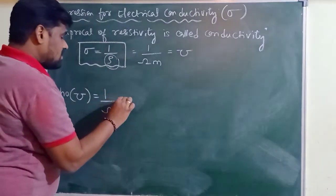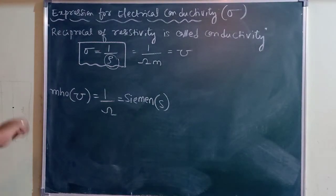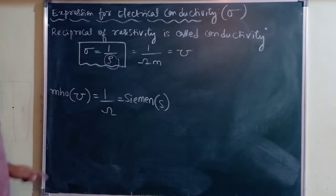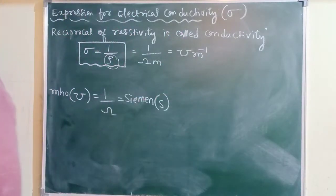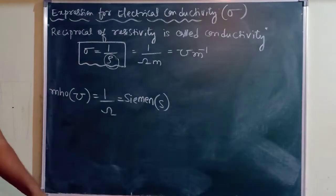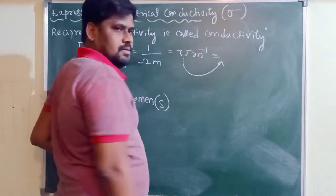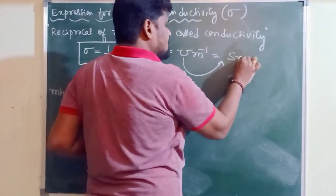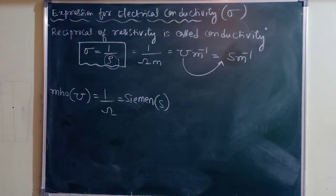Mho is also called siemens. Concentrate on the terms: reciprocal of ohm is called mho, represented by its symbol. Then 1 by ohm per meter — mho per meter — is the SI unit of conductivity. Since mho is also called siemens, another unit of electrical conductivity is siemens per meter. So mho per meter or siemens per meter is the SI unit of electrical conductivity.